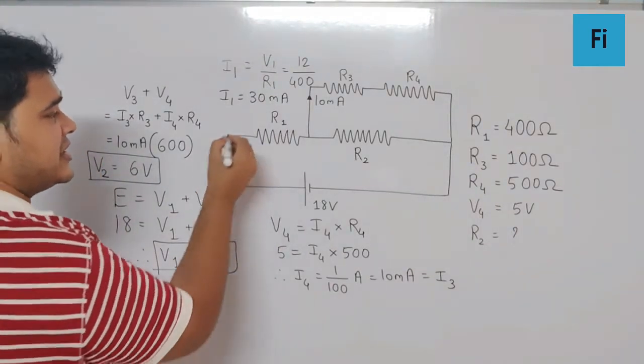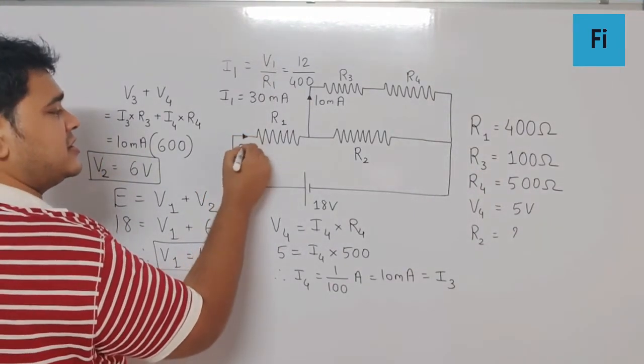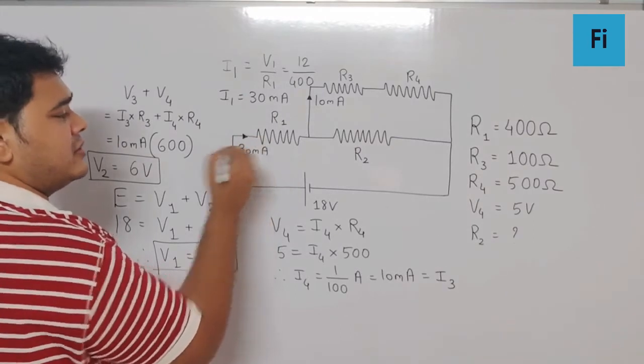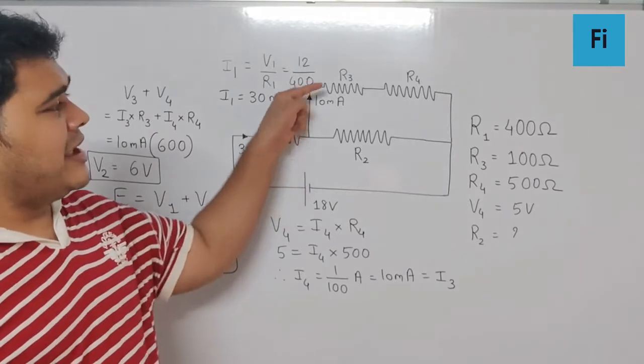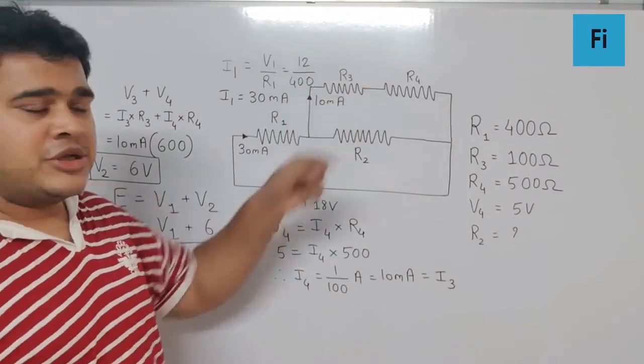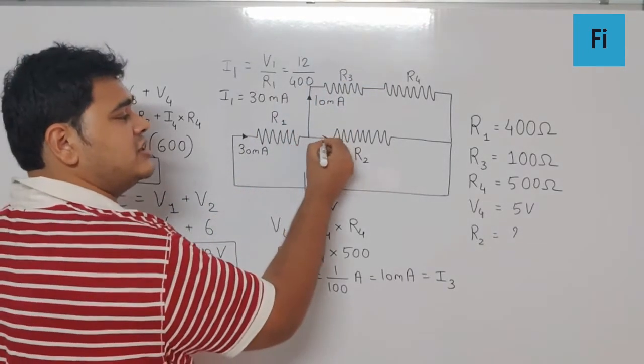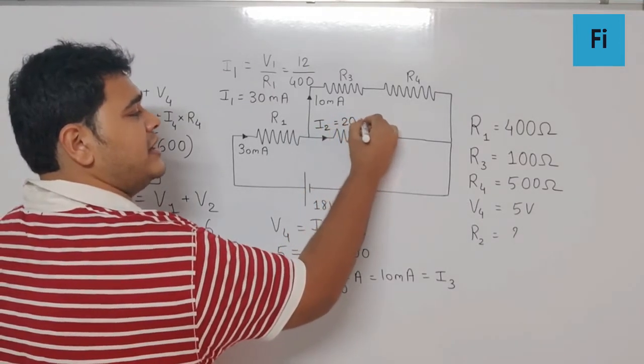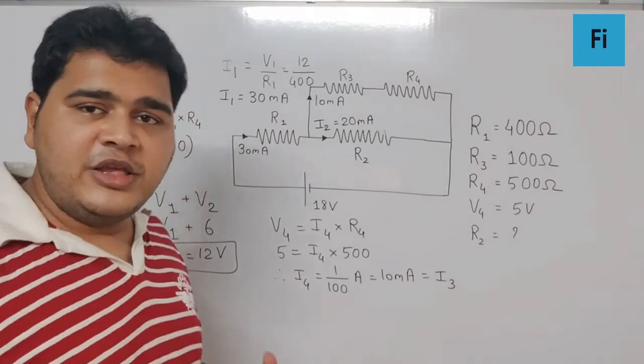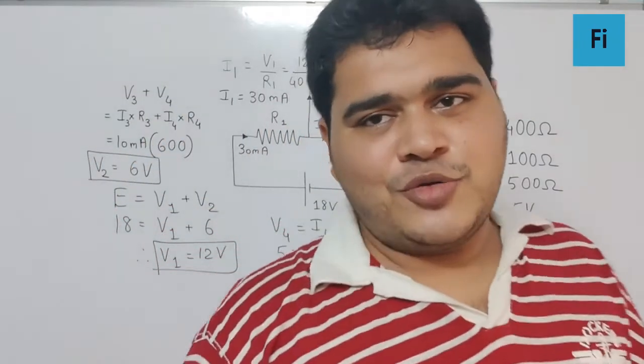Yes guys, that means the current over here is 30 milliampere. So now if you check, out of 30 milliampere, 10 milliampere is going on the upper branch. So definitely through this branch, the I2 will be 20 milliampere, using Kirchhoff's current law.